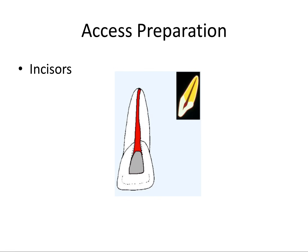Upper central and lateral incisors almost 100% of the time will only have one canal, and you would utilize this triangular shape. For lower incisors, particularly laterals, they can actually have two canals, and a more oval-shaped access may be needed for straight-line access. This is done through the lingual surface, since you don't want a large defect on the facial, and it also gives a better shot at straight-line access to the apex.